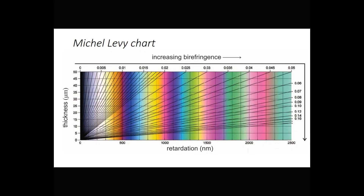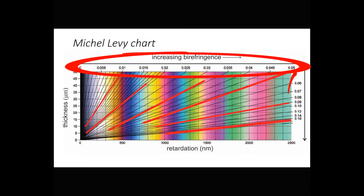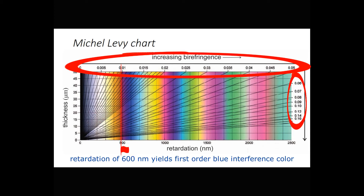The Michel-Levy chart shows the same information as the previous chart, but the axes have been changed. Retardation is across the bottom and thickness is vertical. The Michel-Levy chart is more commonly used by mineralogists and petrologists than the Raith-Sorenson chart. The diagonal lines are lines of equal birefringence, and the values of birefringence are written across the top and down the right-hand side of the chart. The advantage of using this chart is that color swatches are vertical, corresponding to different values of retardation.